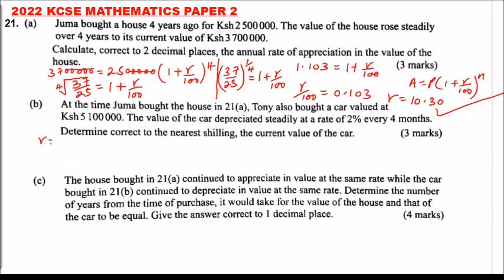The rate is 2%. Because it is depreciating 2% every four months, in a year that will happen three times — at 4, 8, and 12 months. So in 4 years, n will be 12.